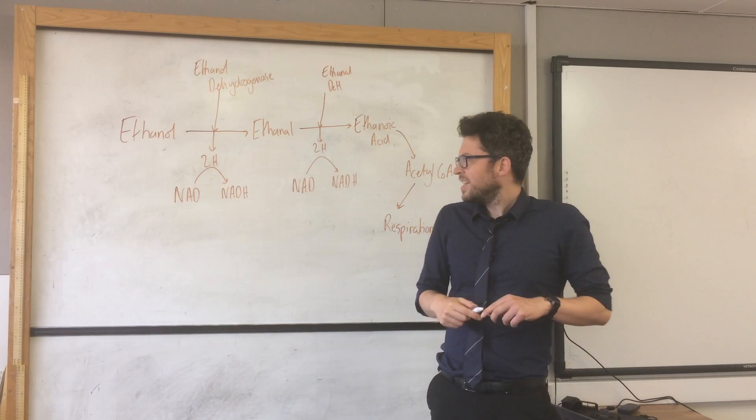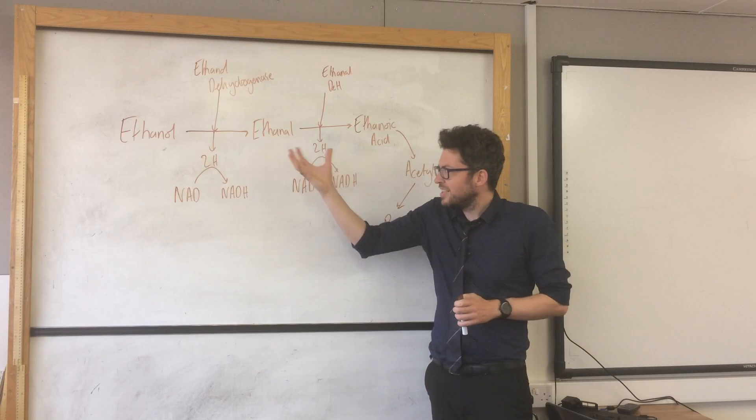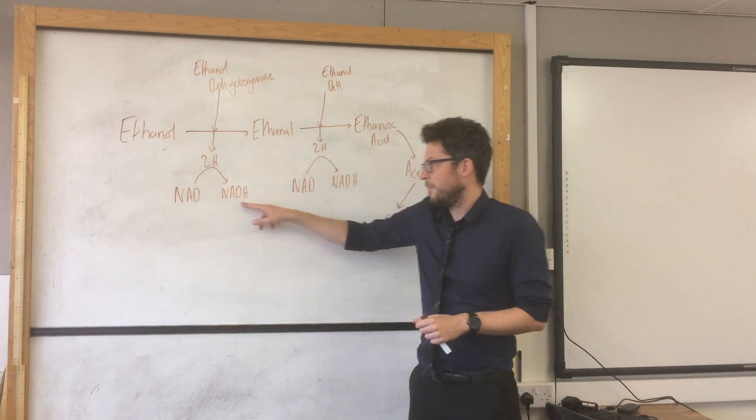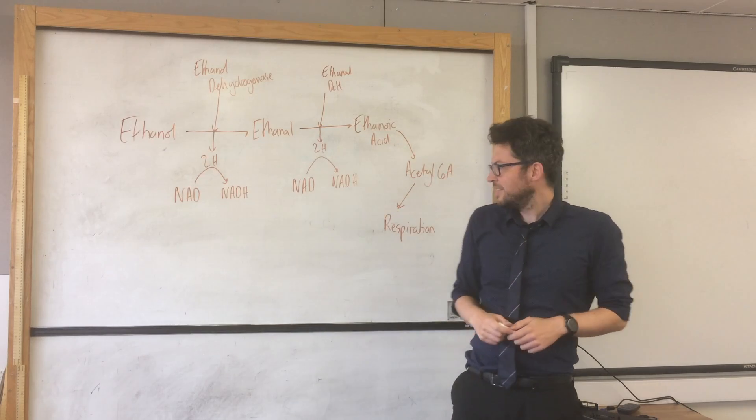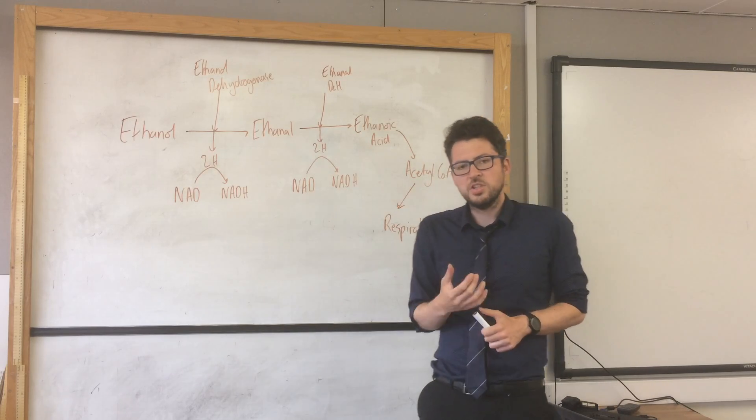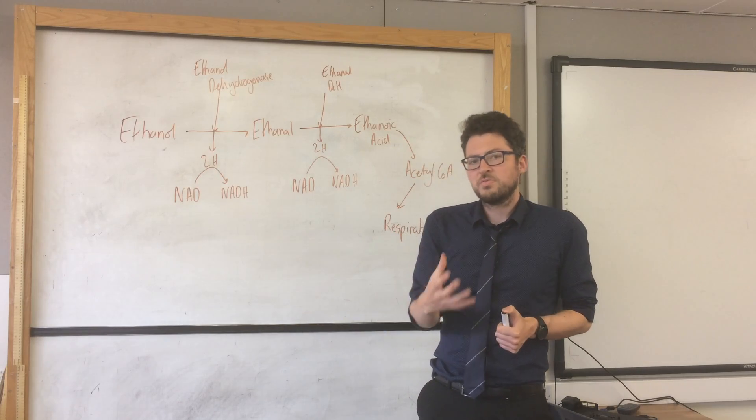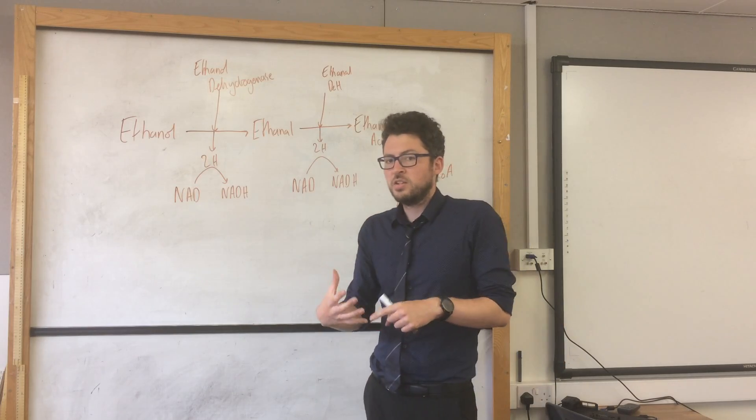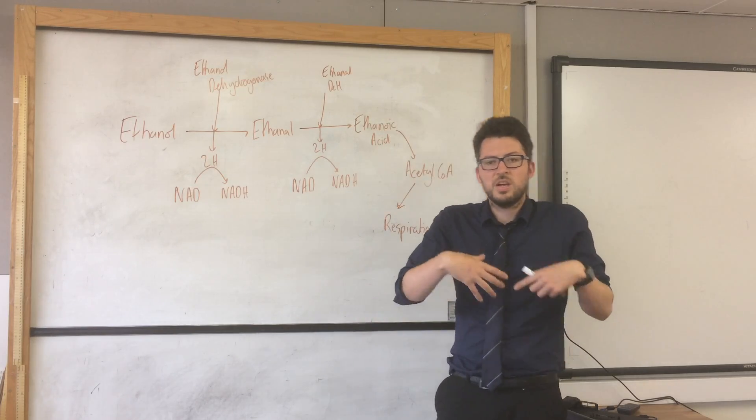Now what we need to be aware of is why this causes problems. Now it links into this part here. So you can see that NAD is used in this process. Now normally in the cells NAD can be used to accept hydrogen from fatty acids because they contain a lot of hydrogen and that can then be used in respiration to help us produce ATP.